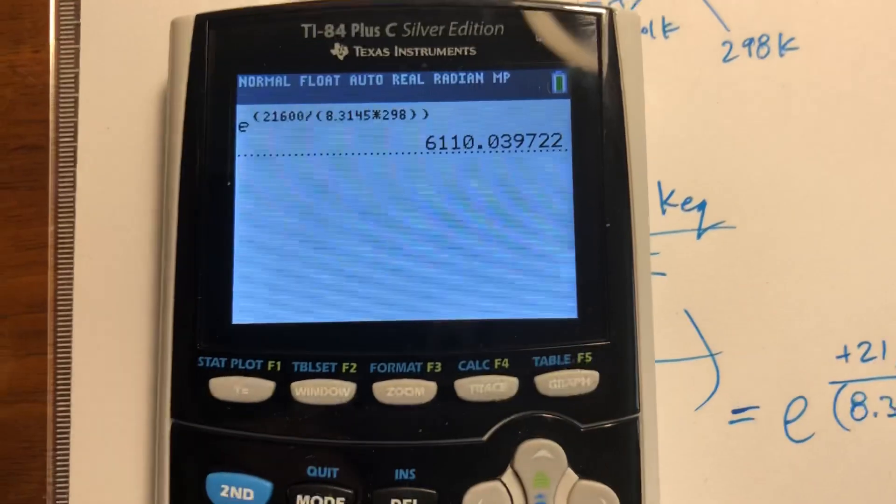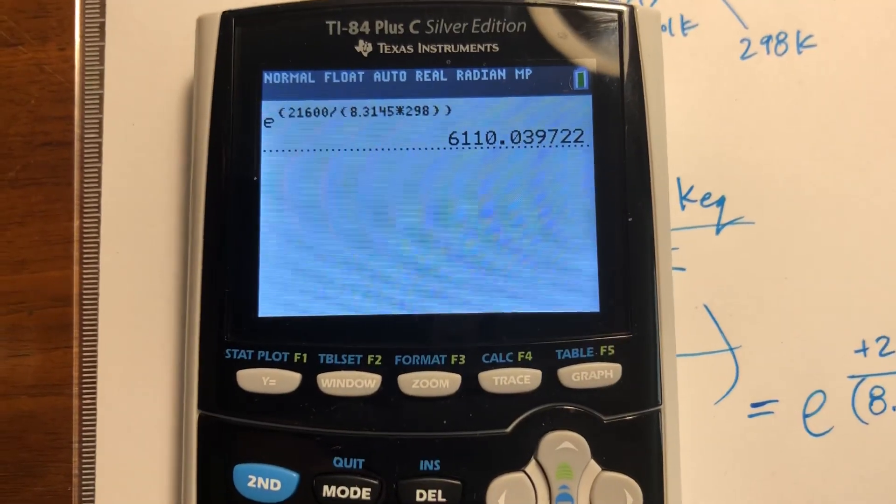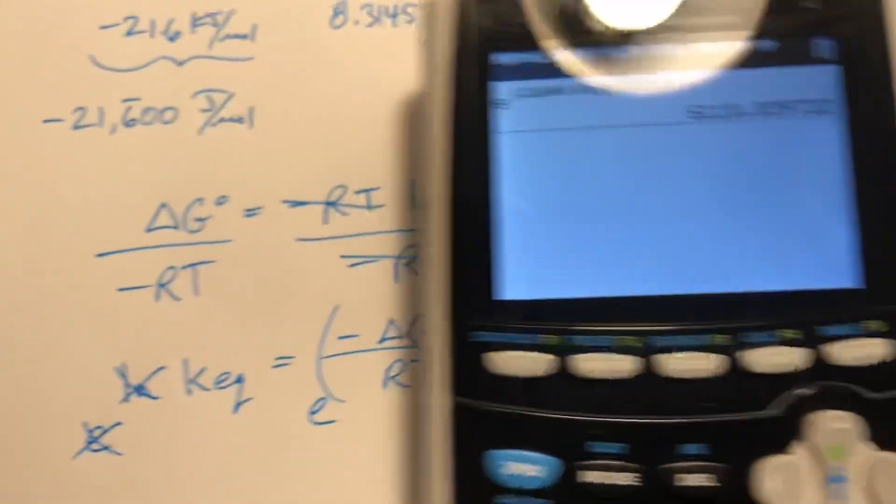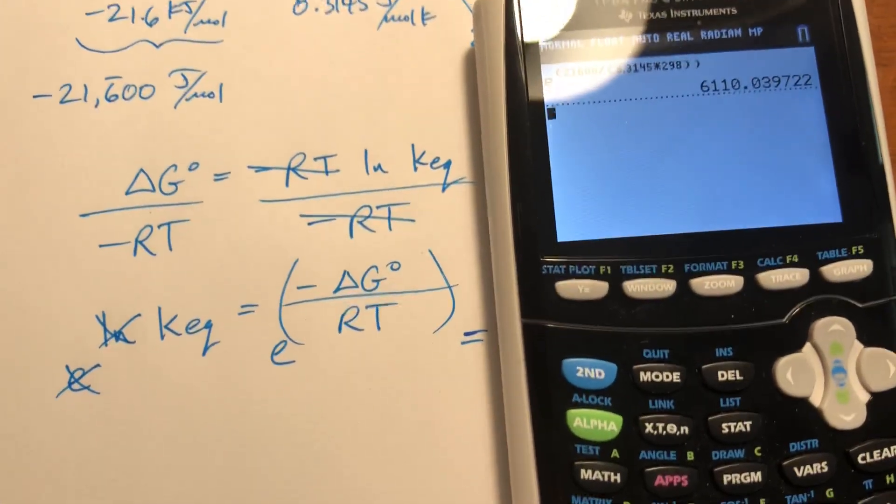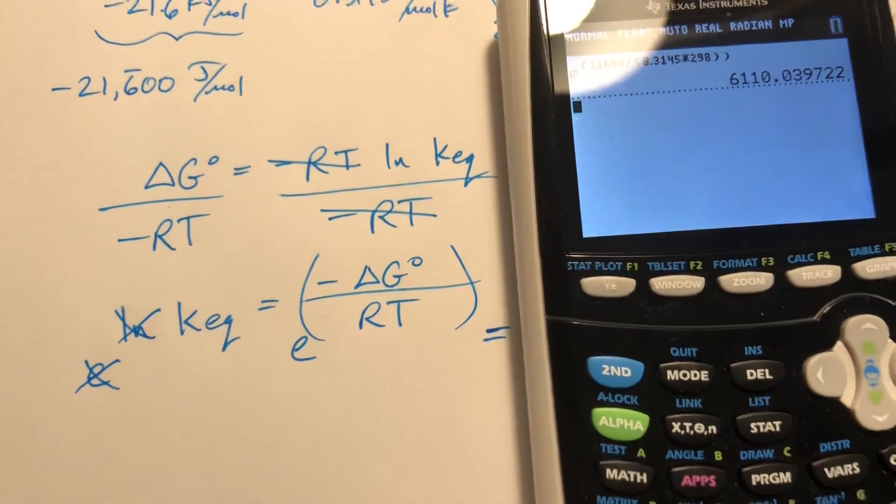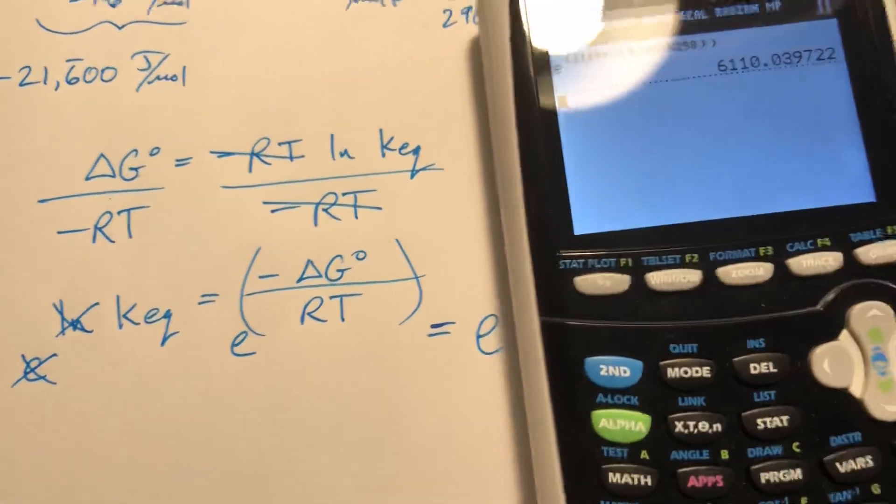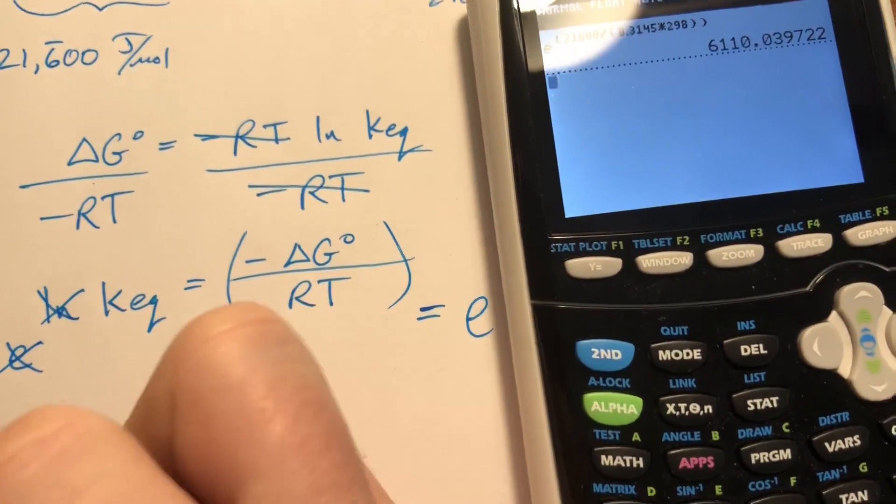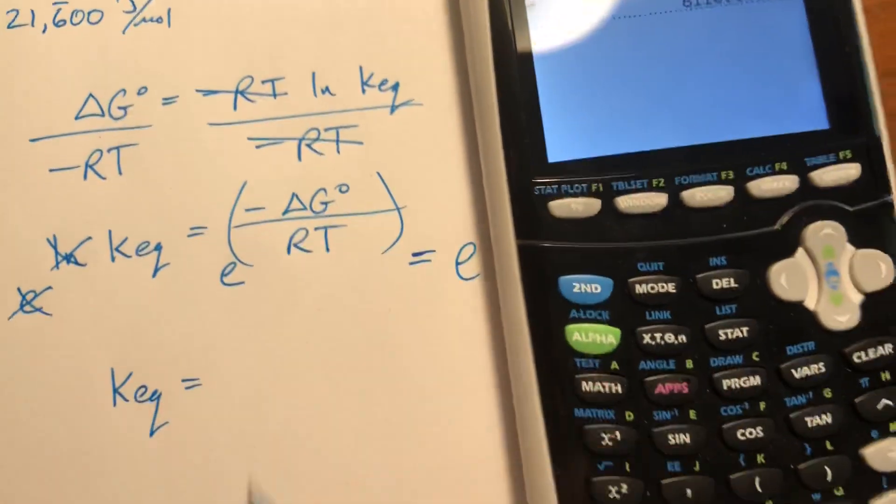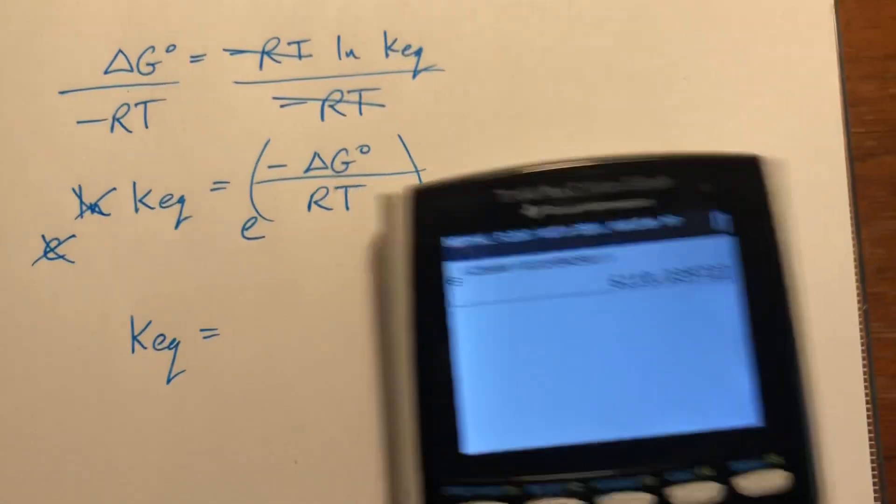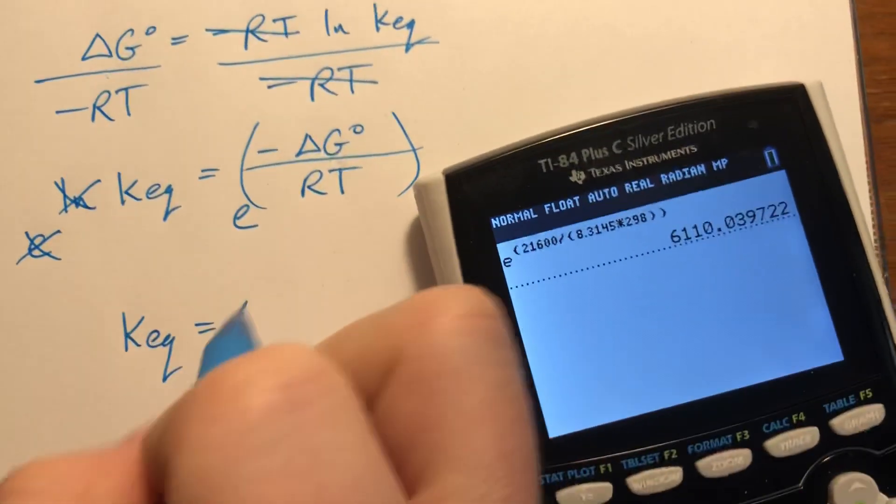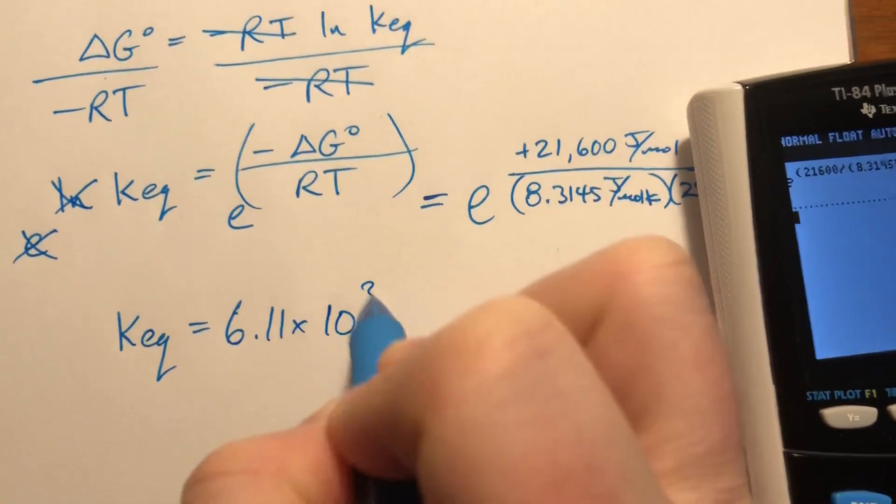And the value I get is 6,110. Well, remember that KEQ, kind of like KC or KP, can have values anywhere from like 10 to the negative 15th to 10 to the positive 15th. I'm going to put it in scientific notation because that's typical for KEQ, but our answer essentially comes out to 6.11 times 10 to the third.